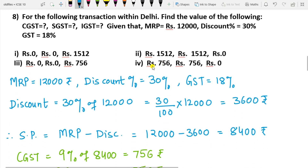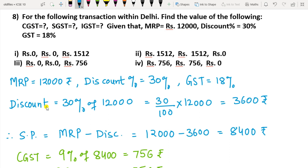Question 8: Small sums can also come for the following transaction within Delhi. Find the values of CGST, SGST, and IGST. The MRP of the product is ₹12,000, discount is 30%, and GST is 18%. MRP, discount percentage, and GST have been given, so find the selling price first.